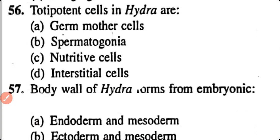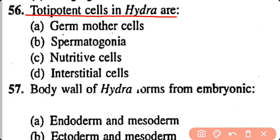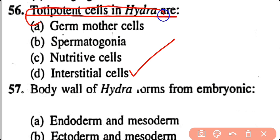Question number 56. The totipotent cells in Hydra are: germ mother cells, spermatogonia, nutritive cells, interstitial cells. Option D. Interstitial cells are the totipotent cells in Hydra, which means they can develop into new cells.